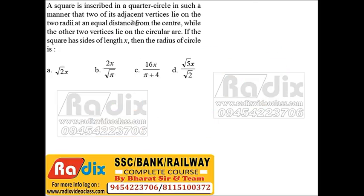Now one more question. This is a question from 2015 examination. A square is inscribed in a quarter circle in such a manner that two of its adjacent vertices lie on the two radii at equal distance from the center, while the other two vertices lie on the circular arc. If the square has sides of length x, then the radius of the circle is?